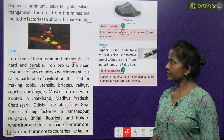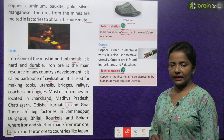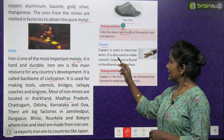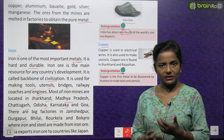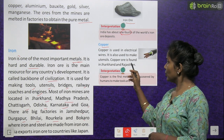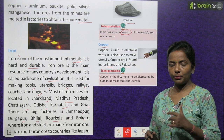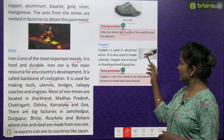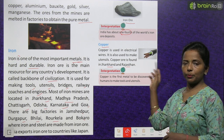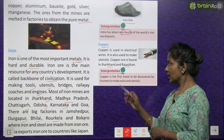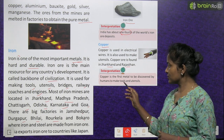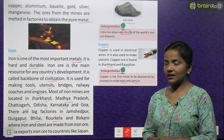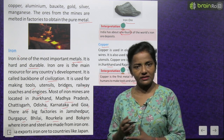Next metal is copper. Copper is used in electrical wires — jo hum electrical wires dekhte hain, unke andar copper use kiya jata hai. It is also used to make utensils. Copper ore is found in Jharkhand and Rajasthan. Interpretation: copper is the first metal to be discovered by humans to make tools and utensils.